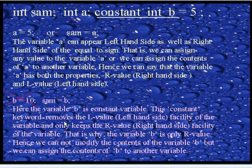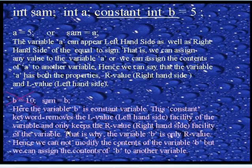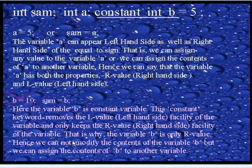The const keyword keeps the R-value facility and removes the L-value facility of the constant variable. That is why the variable B is only an R-value — hence we cannot modify the contents of variable B, but we can assign the contents of B to another variable. That concludes the concept of R-value and L-value.